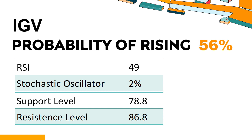IGV — Analyzing the U.S. Market with Technical Indicators. IGV's 14-Day RSI value was 49. When the RSI is above 25 and below 50, it generally indicates that the stock is moderately bearish, meaning the security's price has been falling but has not yet reached oversold levels, typically considered an RSI reading of 25 or lower. The current stochastic oscillator of IGV is 2%, which is considered oversold, indicating a price rebound or recovery is likely, as selling pressure may have exhausted.